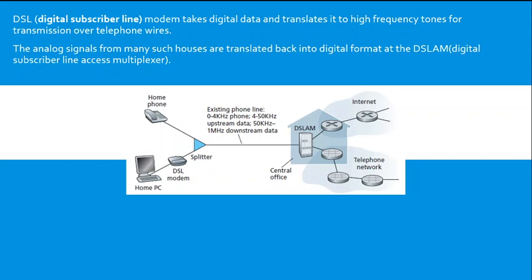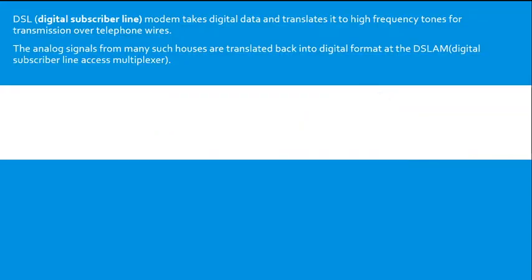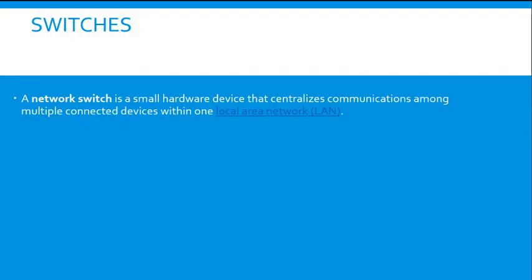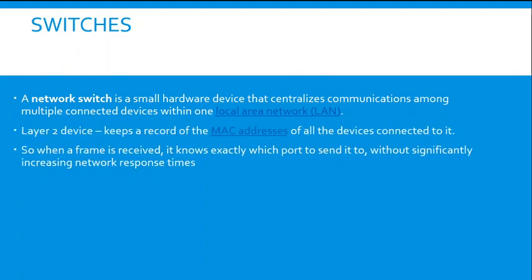A switch is a small hardware device that centralizes communications among multiple connected devices within one LAN — Local Area Network. It is a Layer 2 device that keeps a record of the MAC addresses of all devices connected to it. When a frame is received, it knows exactly which port to send it to without significantly increasing network response times. This is why switches are really important in large buildings.